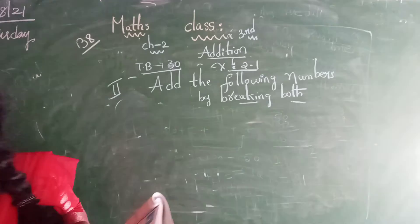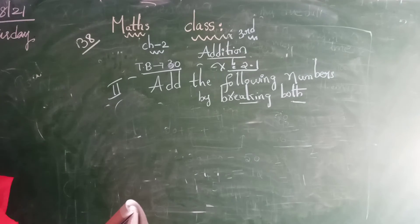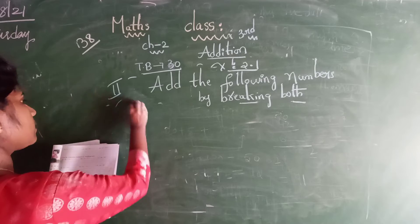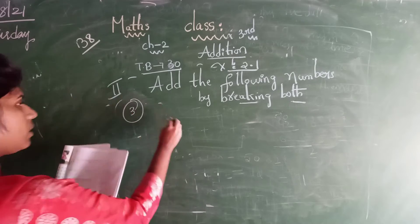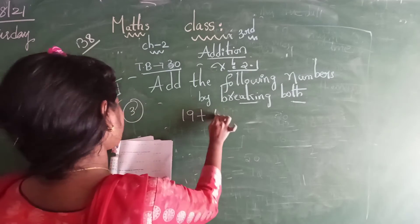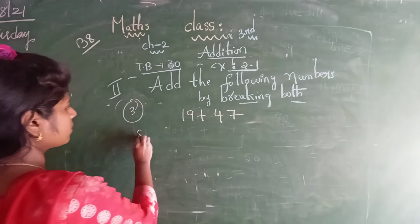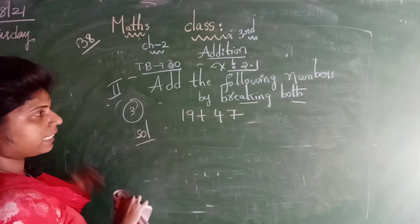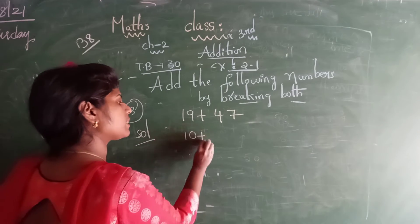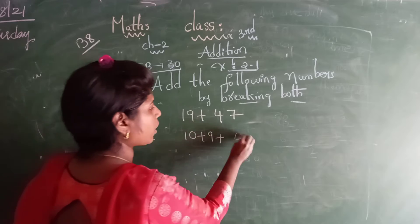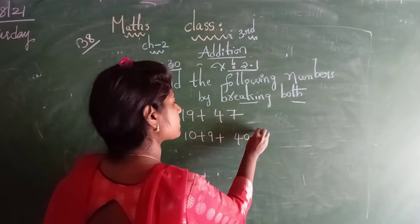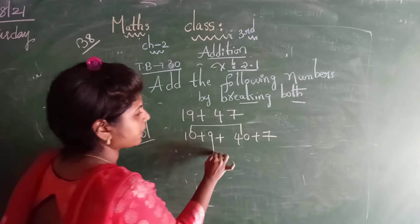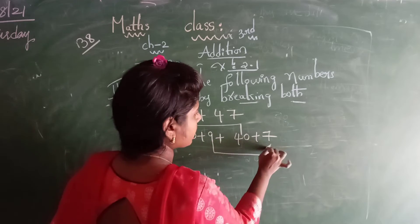Next. Third problem: 19 plus 47. So, 19 is 10 plus 9. 47 is 40 plus 7. Here we go — 1 and 3 indicate change, 2 and 4 indicate change.